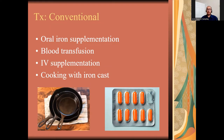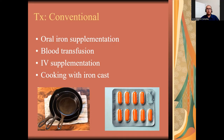Now let's look at conventional treatments — what your doctor might do if you've been diagnosed with iron deficiency anemia, depending on the severity. You may be given oral iron supplementation pills. They can also do a blood transfusion if you have significant blood loss and need the right amount of blood quickly. You could also receive an IV iron injection, which some private practices provide to raise iron levels, though it's not as fast as a blood transfusion. Another option is cooking with an iron cast pan.